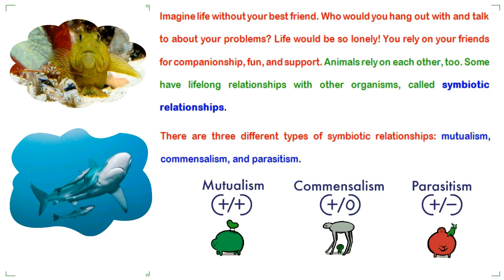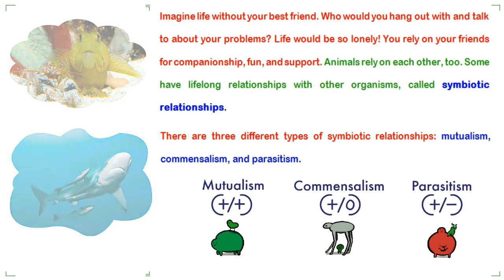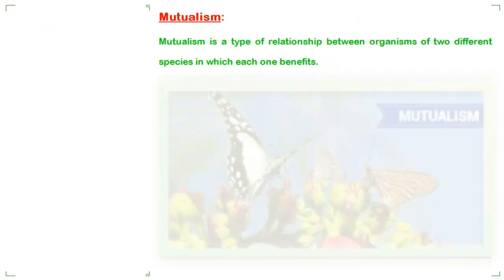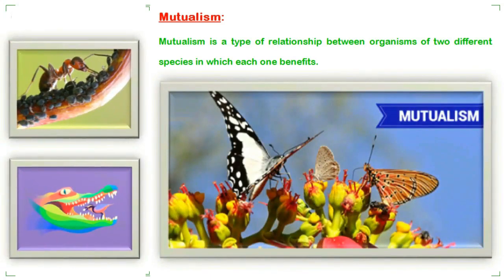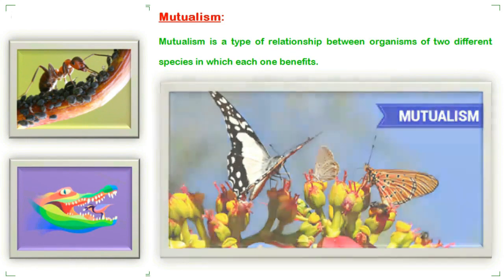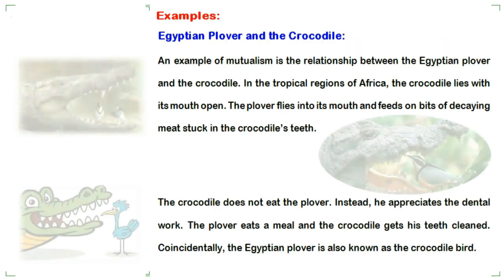There are three different types of symbiotic relationships: mutualism, commensalism, and parasitism. We will now learn more about all types of symbiotic relationships with the help of examples. Mutualism is a type of relationship between organisms of two different species in which each one benefits.